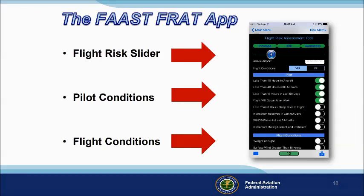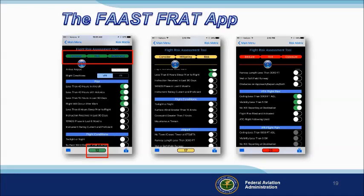Here you can see the beginning of a risk assessment. The pilot has selected four conditions that apply to the flight. After that, the assessment will move on to flight conditions. As conditions are selected, the flight risk slider moves from left to right as risk values accumulate. When a risk reduction condition is selected, the slider moves from right to left, indicating the reduction in total risk value. Here's the display you'll get when the risk value is low — the slider bar and total risk value have a green background. As the risk value becomes moderate, the display background color changes to yellow. And when the risk value goes into the red, it's imperative that we do something to reduce our risk exposure.